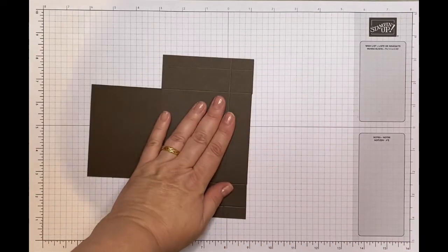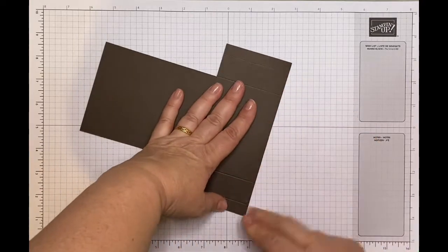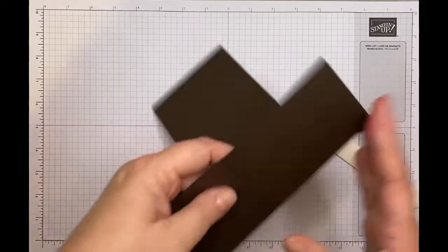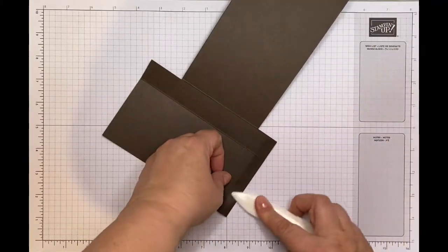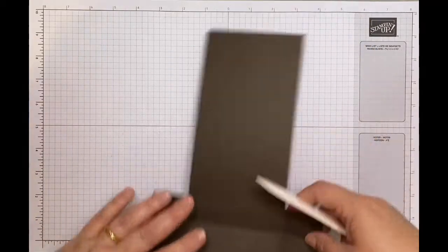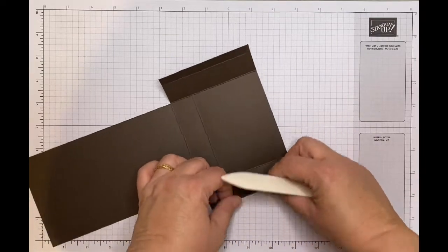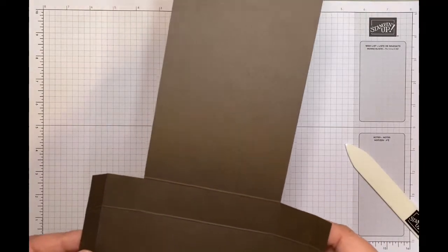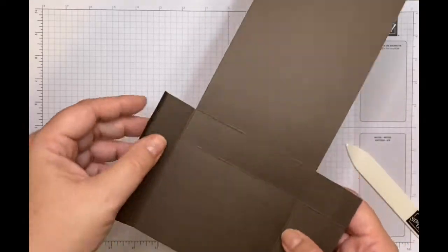Now I'm going to use my bone folder and just bone fold and finish all my score lines, just so I've got nice crisp finishes when I assemble my box. There's a little bit more cutting to do. I've cut my snips out.